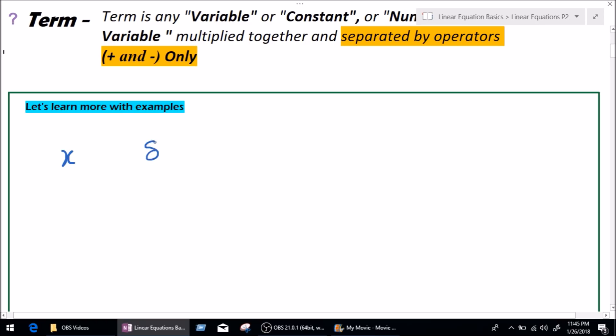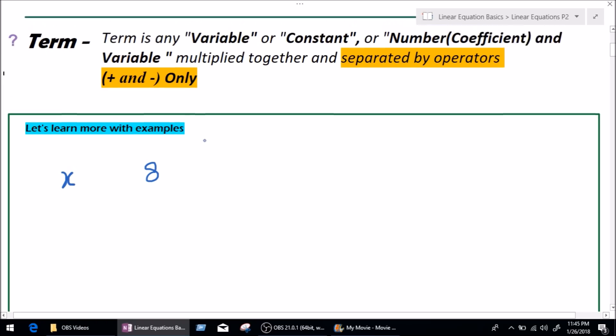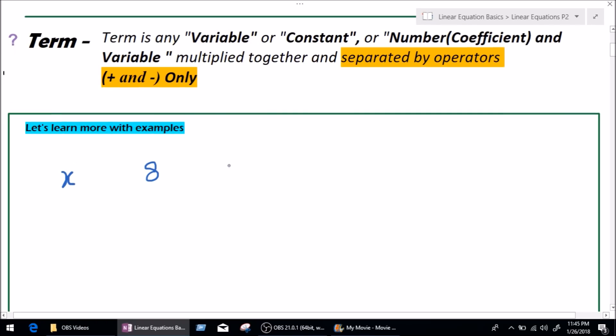All I can think of is 8. And, coefficient multiplied by variable as you can see in the definition. Let me write 4x. So, right now on our screen, we have a variable, we have a constant, and we have a coefficient and variable together. How does this help us learn what a term is? Let's see.